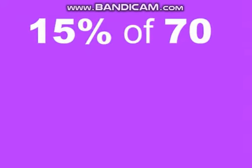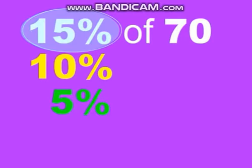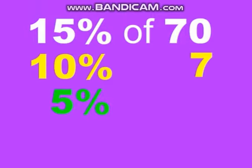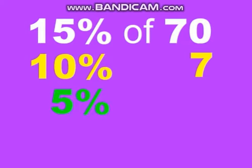Let's try a tricky one. What is 15% of 70? To solve this, we need to find 10% and 5% to give us our 15%. So what's 10% of 70? We move the decimal one to the left to give us 7. And 5% is half of 10%, so what's half of 7?